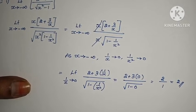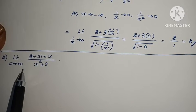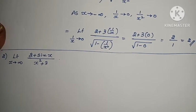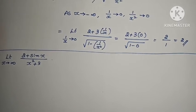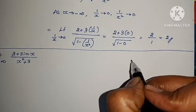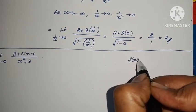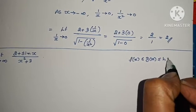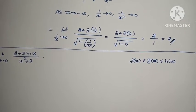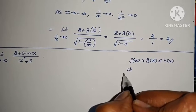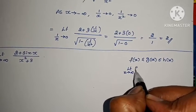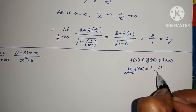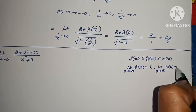In the second problem: limit x tends to infinity of (2 + sin x) by (x² + 3). Since sin x oscillates, we use the Sandwich (Squeeze) theorem. We know f(x) ≤ g(x) ≤ h(x), and apply the limit to all three. If limit of f(x) = 0 and limit of h(x) = 0 as x tends to infinity, then by the theorem the middle limit is also 0.